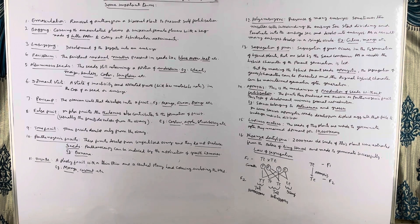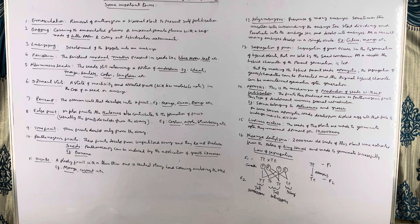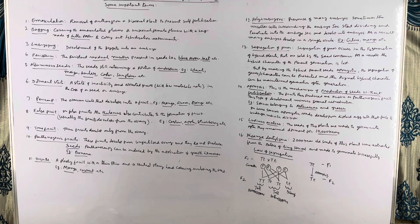Perisperm: generally, the nucellus disappears, but in some plants a residual nucellus still remains in the seeds. This condition is known as perisperm. Examples include black pepper, beet, etc.